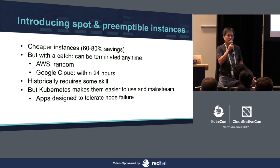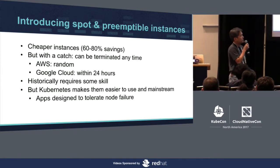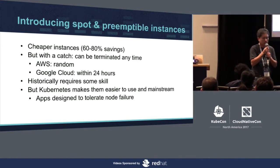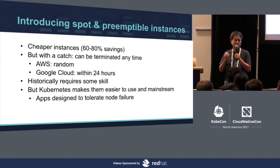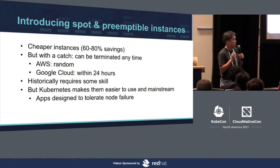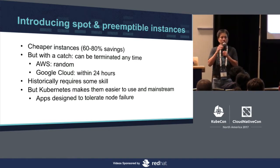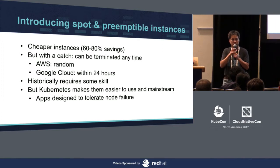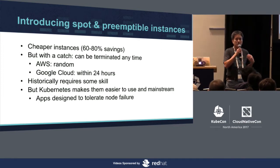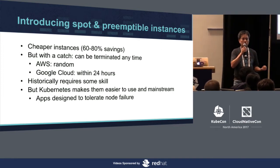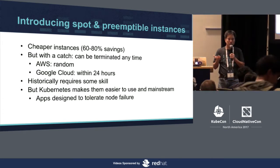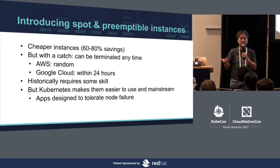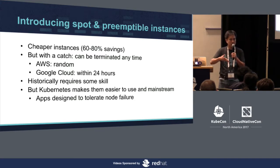Fast forward to today — we have Kubernetes. We think that Kubernetes is going to make spot instances mainstream. Kubernetes can really hide the complexity and the details of running spot instances because it is built to handle node failure. Under the scenes, it will leverage public cloud resources like auto-scaling groups that will automatically spin up a new instance if one dies.